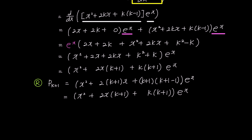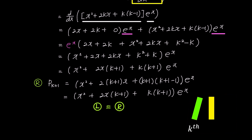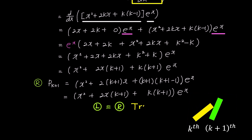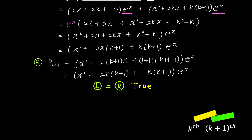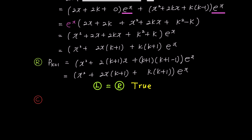The right side of P(k plus 1) we just found matches the left side of P(k plus 1) we derived earlier. By demonstrating that the left side and right side of P(k plus 1) are equal, we have proven that when the kth domino falls, the k plus 1th domino also falls. Now the last step remaining is the c step, where we write the conclusion.